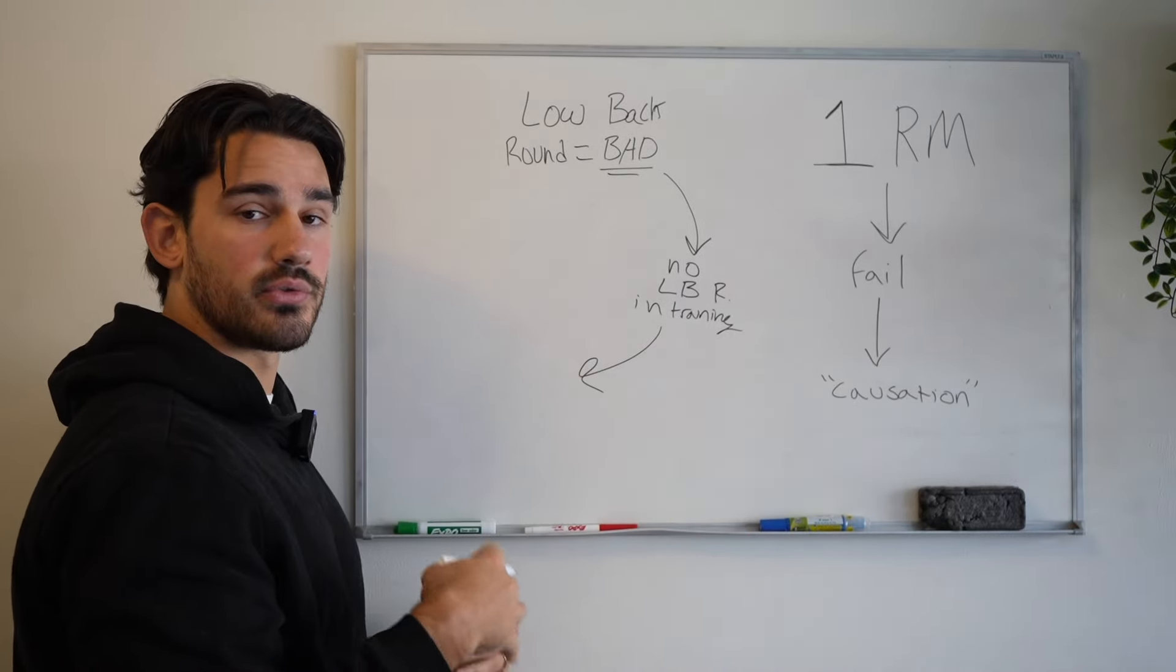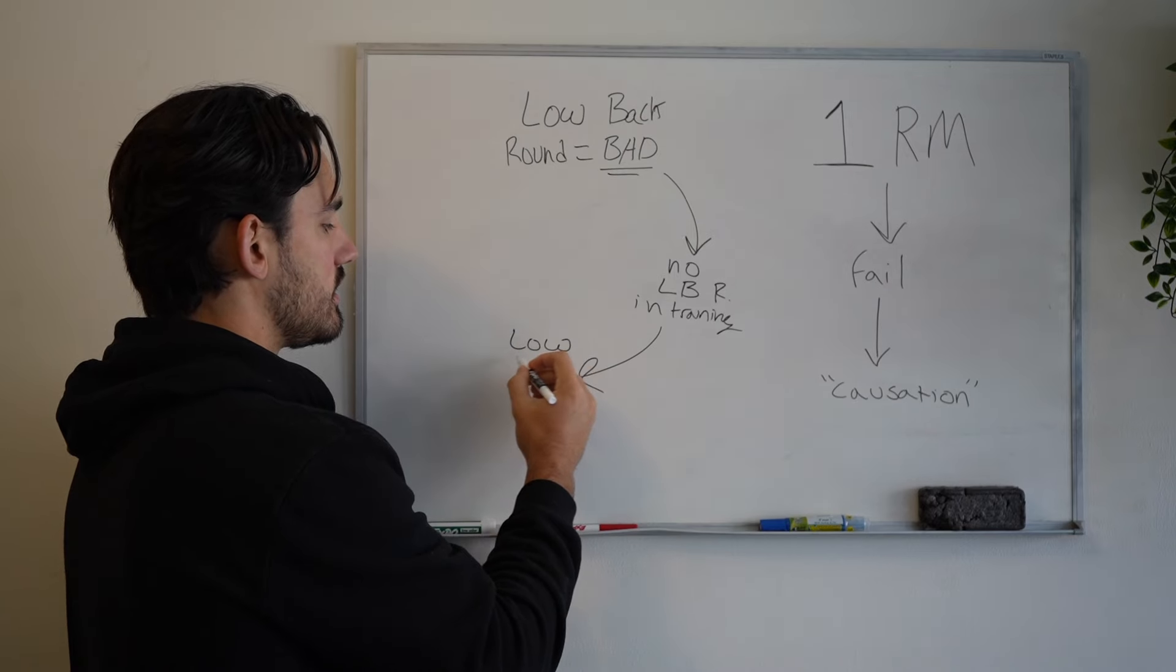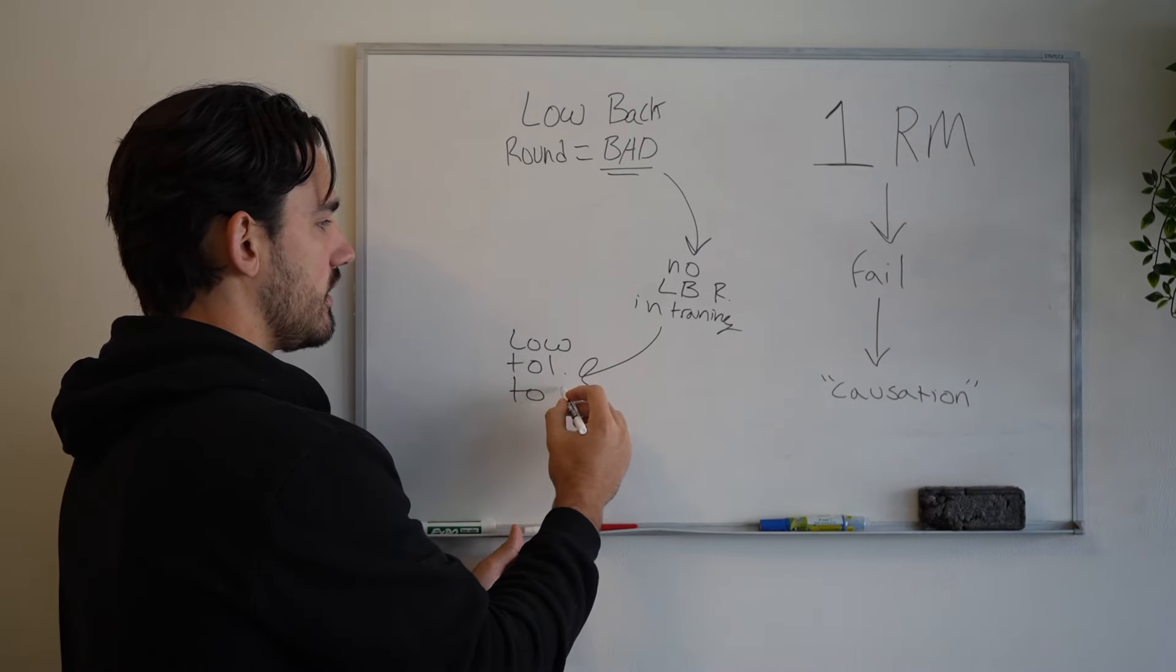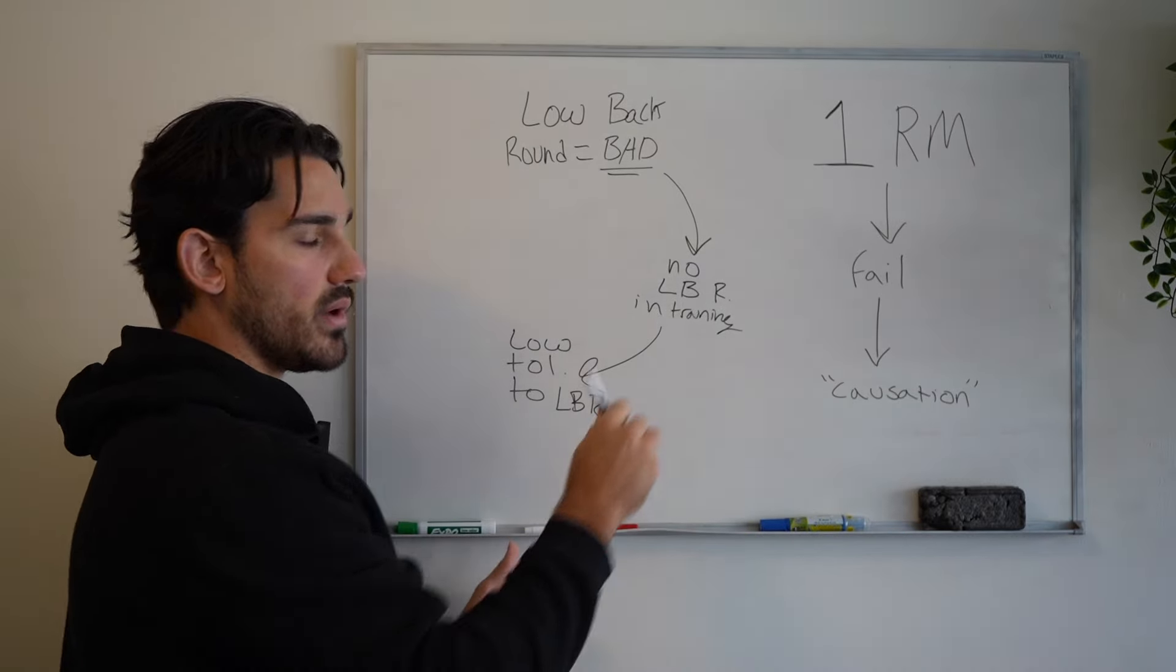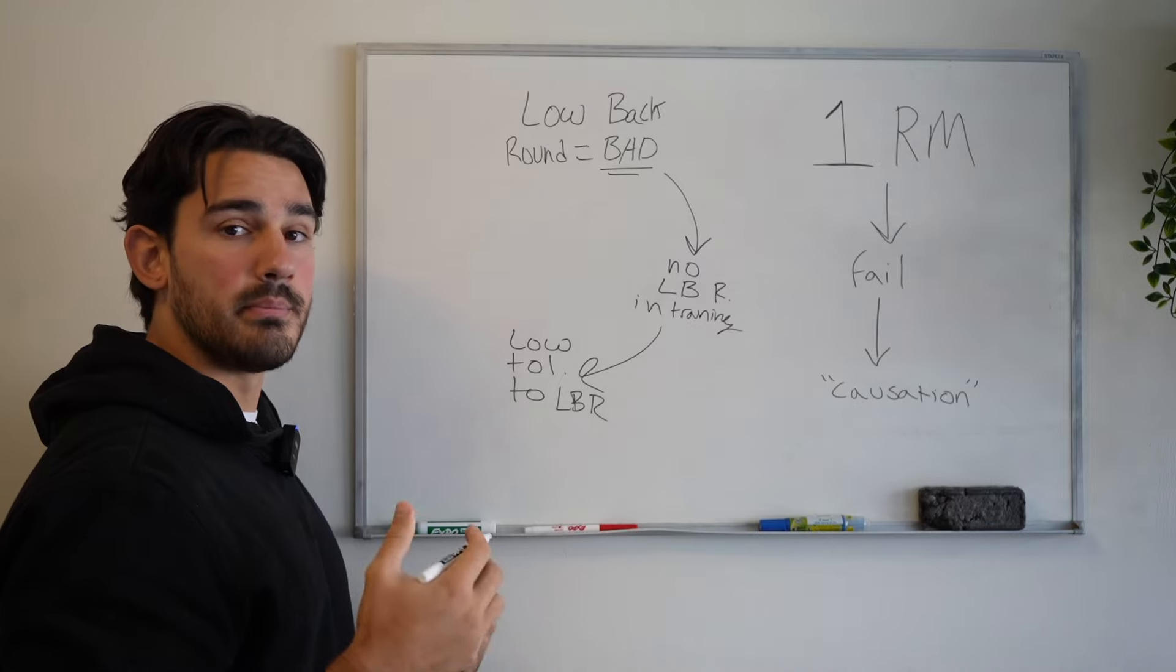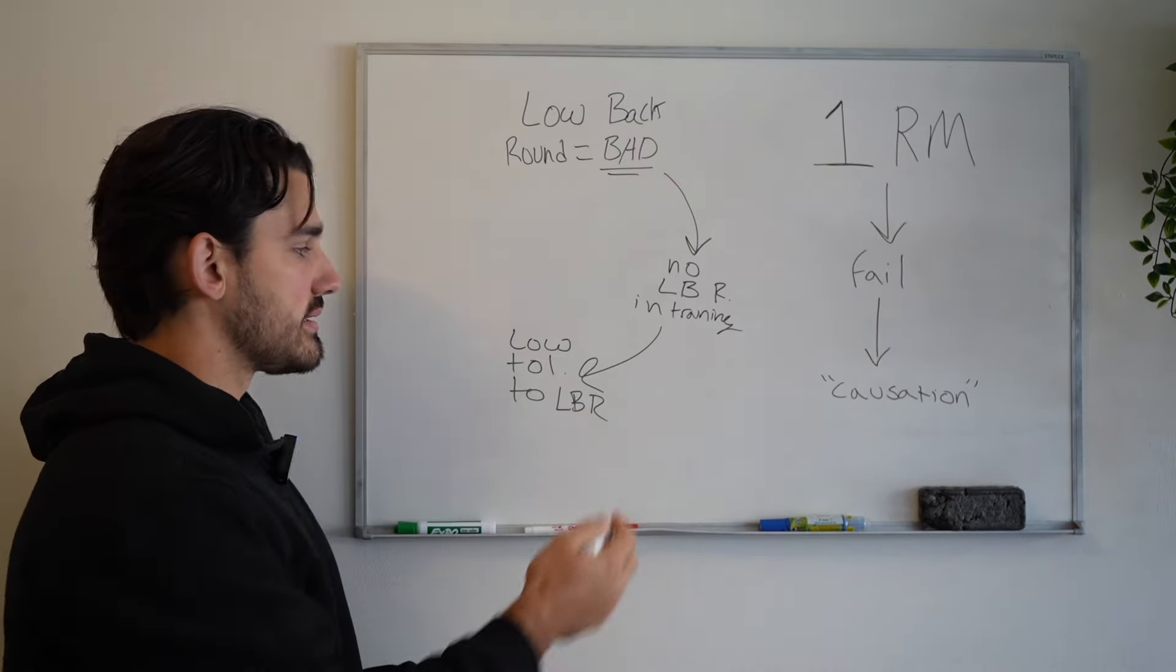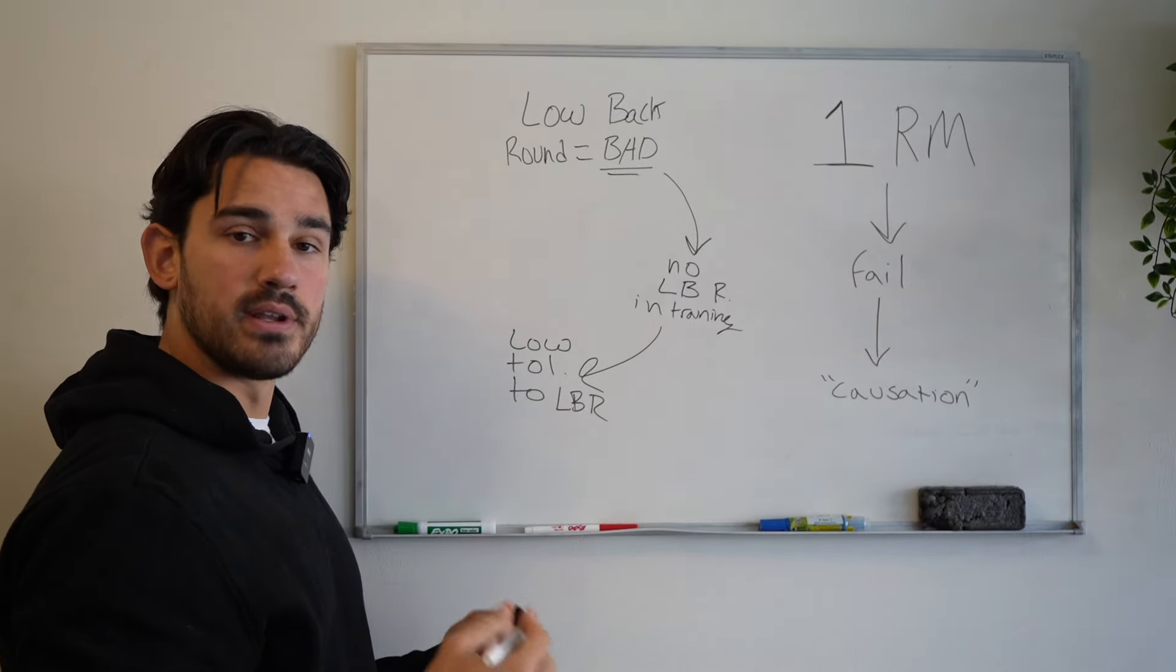It leads to an adaptation or really a lack of adaptation in low tolerance to low back rounding. In other words, if you avoid the low back rounded position and if you avoid training it, what happens? Well, what doesn't happen is you don't get stronger in the rounded low back position.